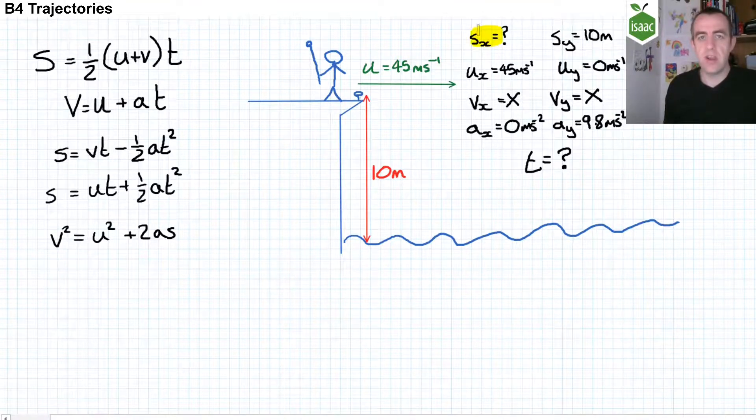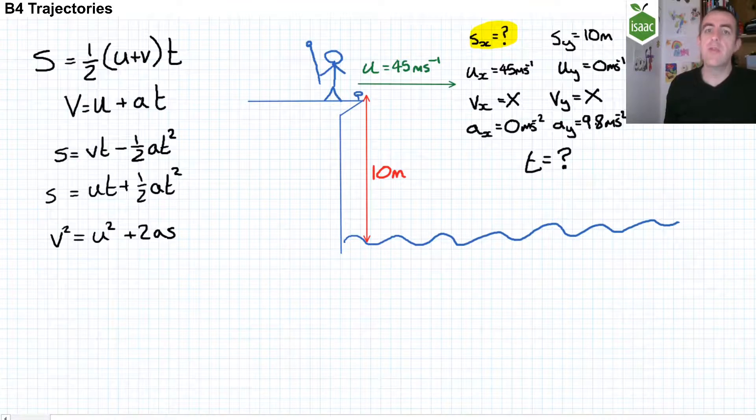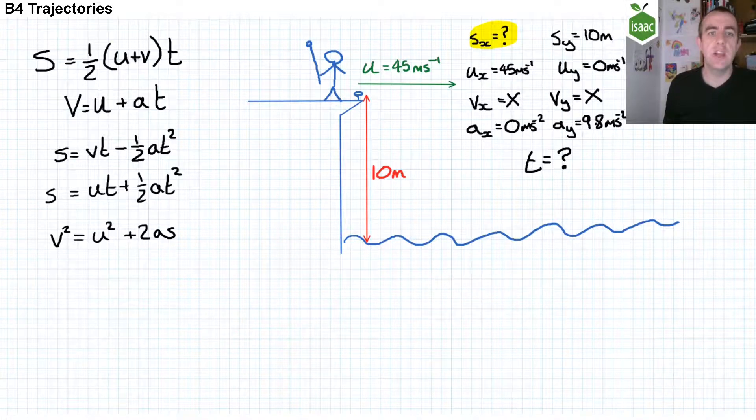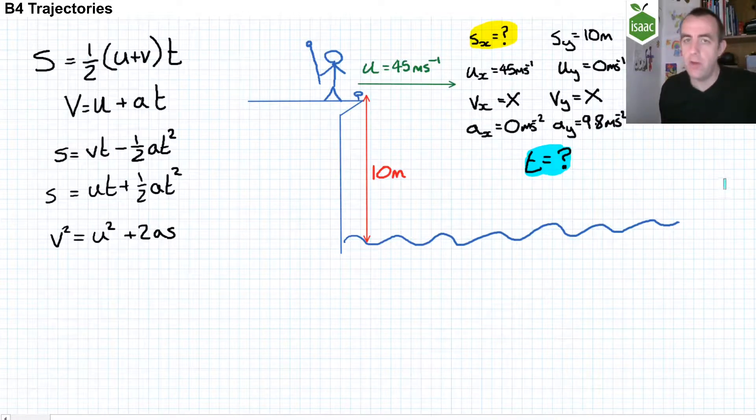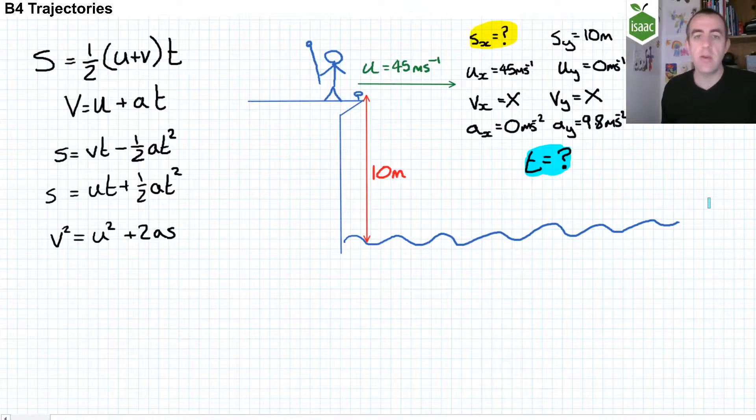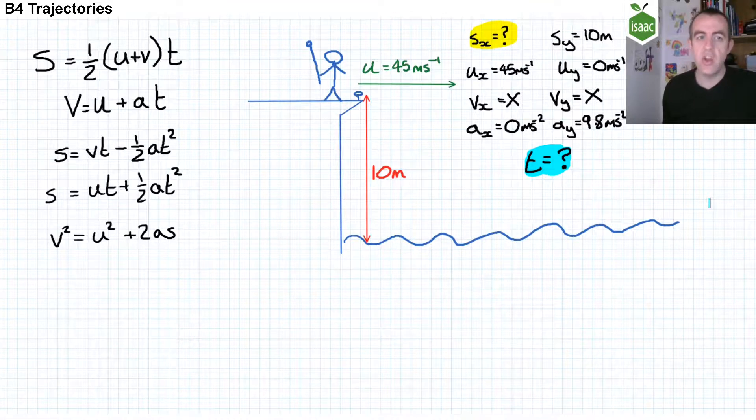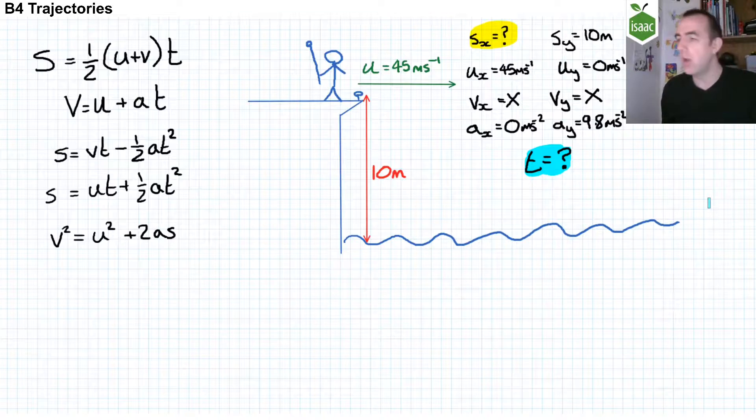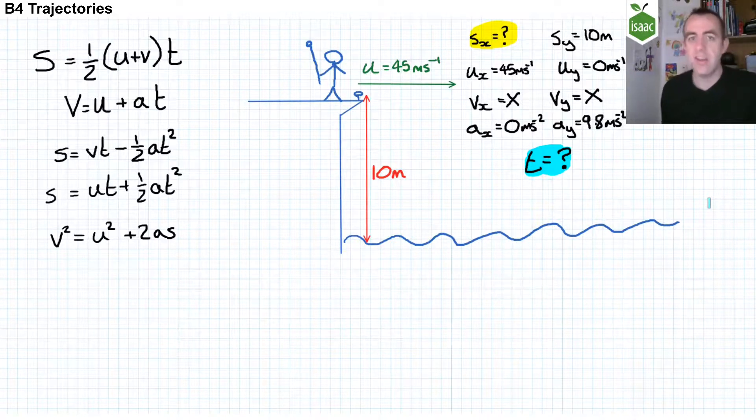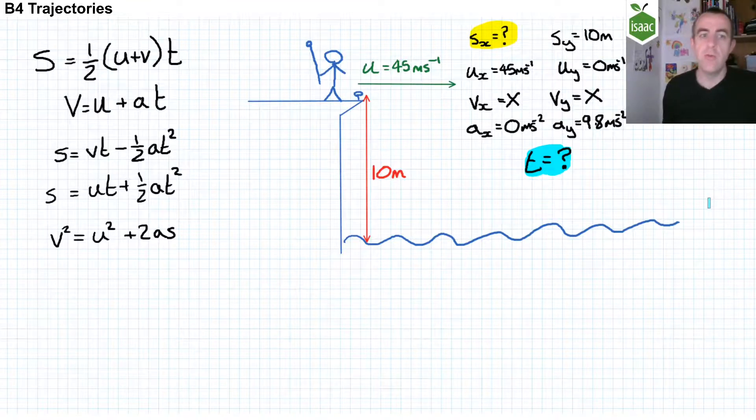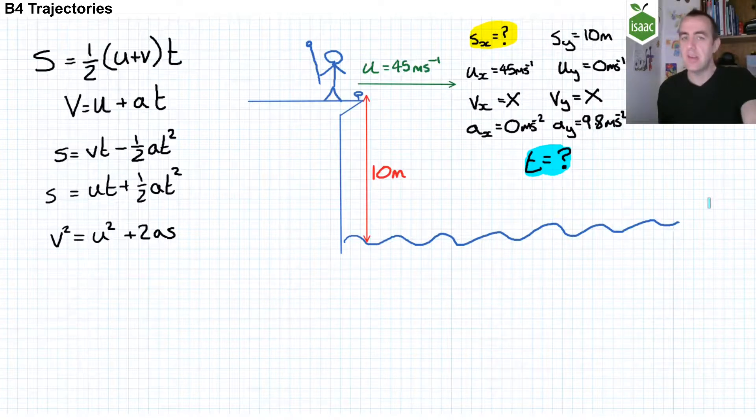Ultimately, what I want to find is S_x. But to find that, I have to initially find out what T is. So I use the right-hand column of SUVAT equations, the y-direction, to calculate what T is. And that's the NOV equation, or the fourth one on the list on the left. I will then use that time value and the NOV equation for the x-direction to calculate what the displacement is in the x-direction. I'll show you those two steps now.